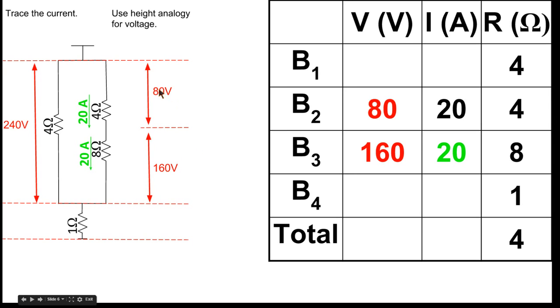If this voltage drop is 80, and this voltage drop is 160 for this entire side here, then the total drop from top to bottom is 240 for just this section of the circuit. Since on this side there's only one resistor, we know its voltage drop has got to be 240.